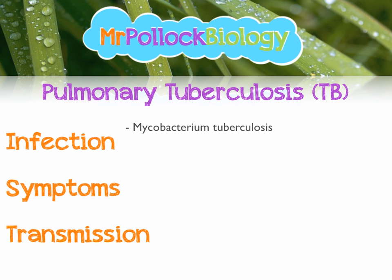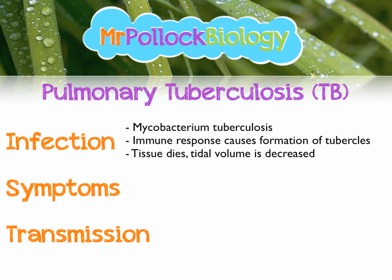TB is caused by infection of the lungs by Mycobacterium tuberculosis, which is a bacteria. When you're infected with TB, your immune response causes formation of things called tubercles, which are small walled regions that form around the infection. The problem happens when the tissue inside those tubercles dies. Because of that loss of tissue, the overall tidal volume of the lungs is decreased, meaning you can take in a lesser volume of air each time you breathe.